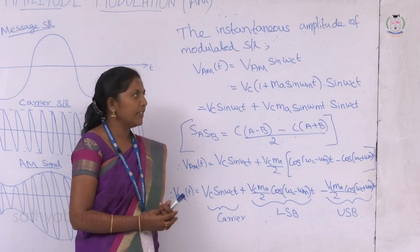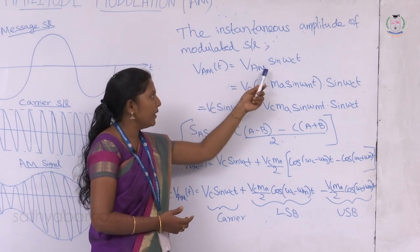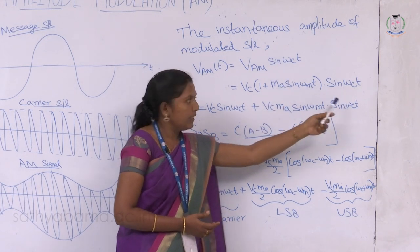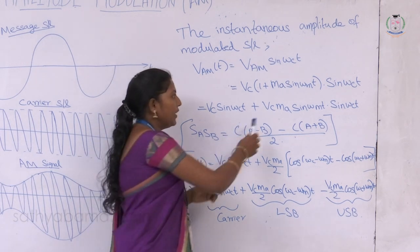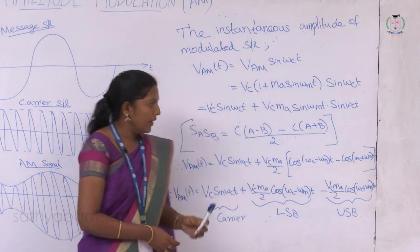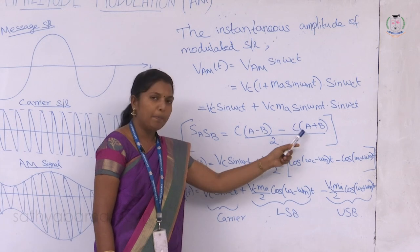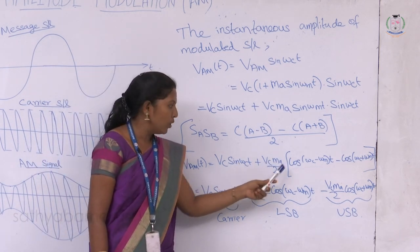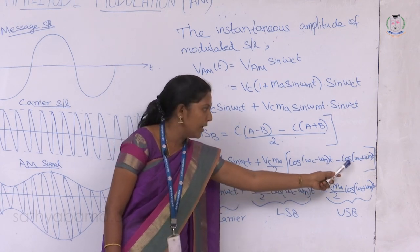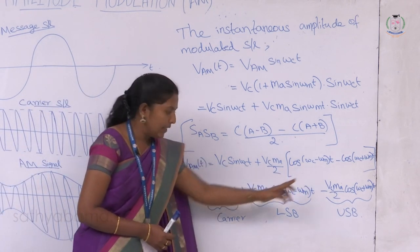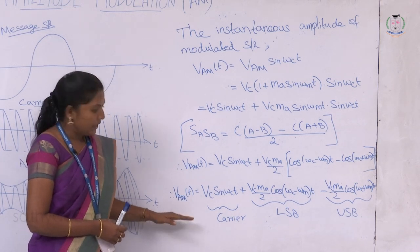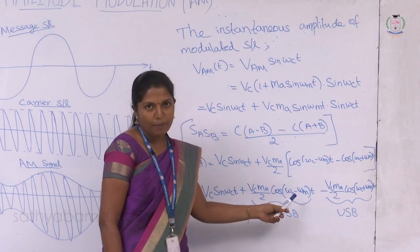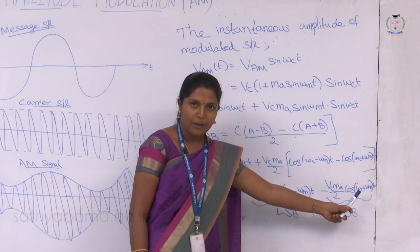The instantaneous amplitude of the AM signal is Vam(t) = Vam · sin(ωc·t) = Vc(1 + Ma sin(ωm·t)) · sin(ωc·t). Expanding: Vc sin(ωc·t) + Vc·Ma sin(ωm·t) sin(ωc·t). Using sin(A)sin(B) = [cos(A−B) − cos(A+B)]/2, we get: Vam(t) = Vc sin(ωc·t) + (Vc·Ma/2) cos((ωc − ωm)t) − (Vc·Ma/2) cos((ωc + ωm)t).